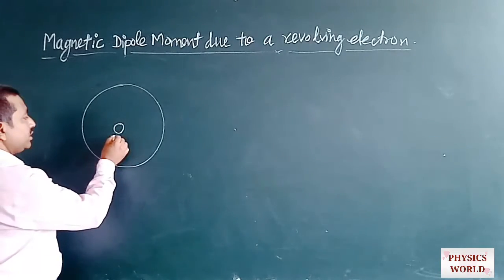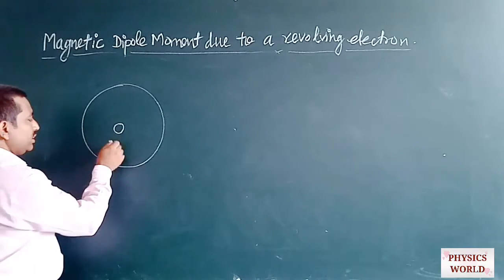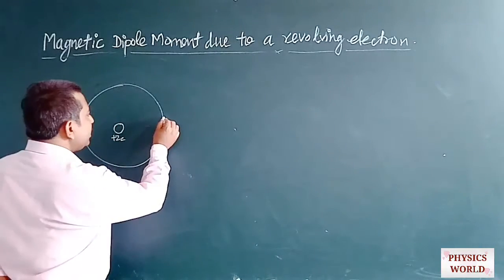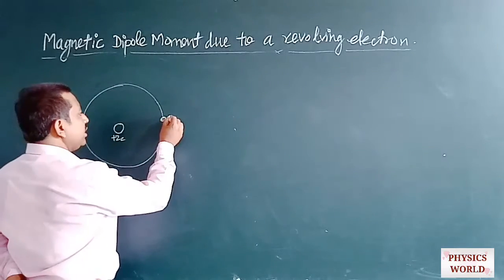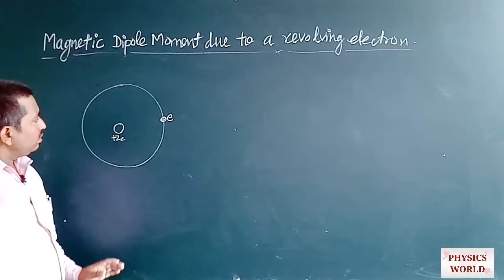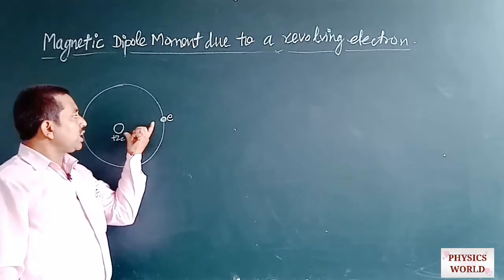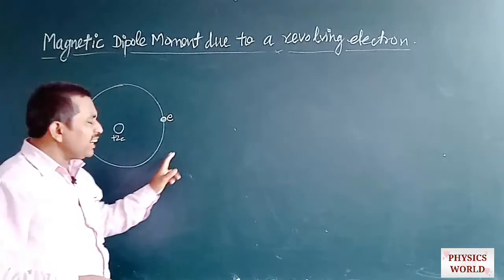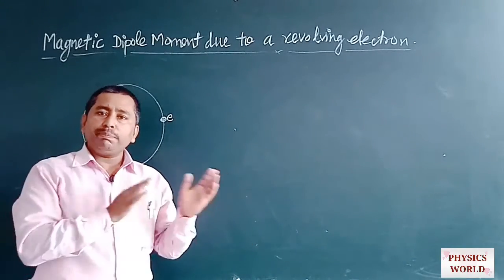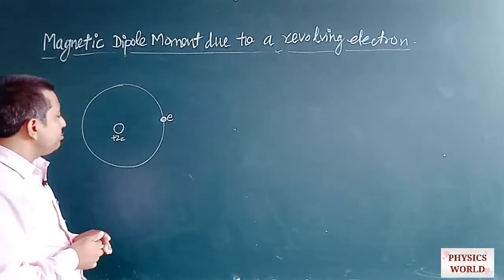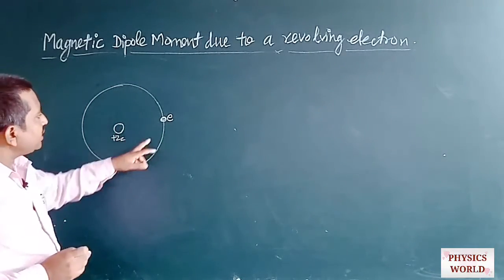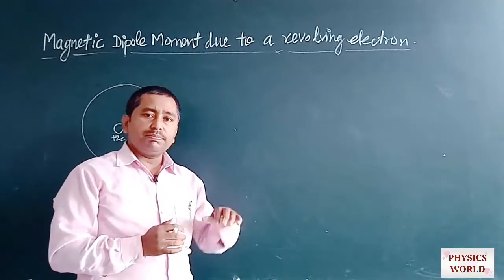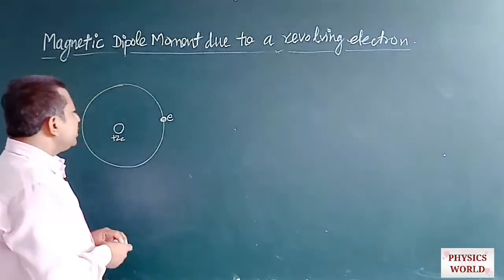Suppose the number of protons present in the nucleus is +Z and the total charge at the center is +ZE, and the electron revolving around the nucleus has charge -E. There is an electrostatic, that is coulombic, force acting between these two charges. This revolution of the electron is similar to a planet revolving around the sun, where the binding force is gravitational, while here it is the electrostatic coulombic force.